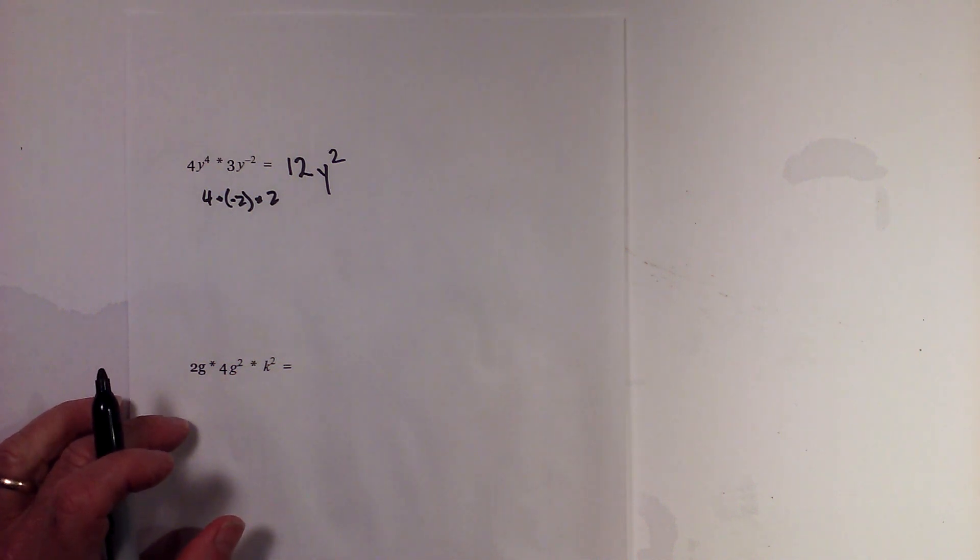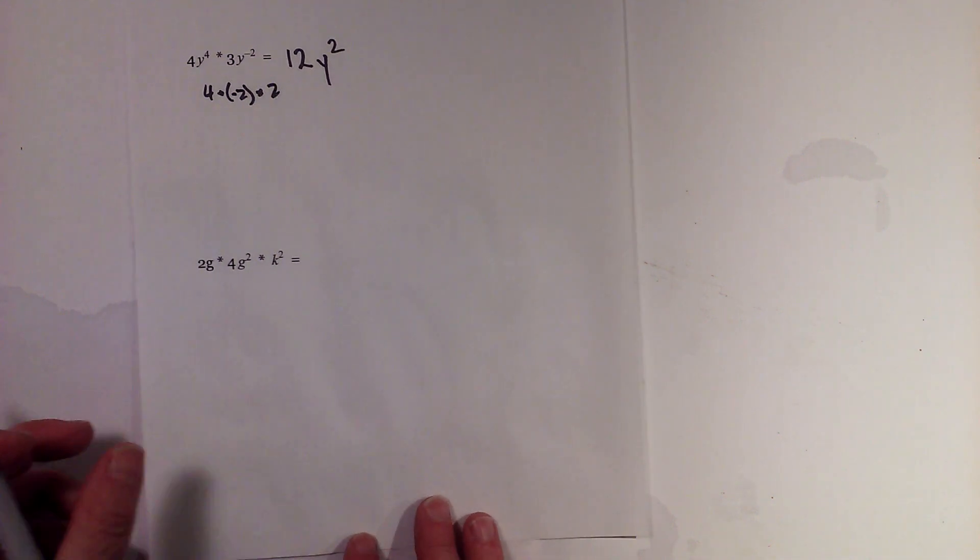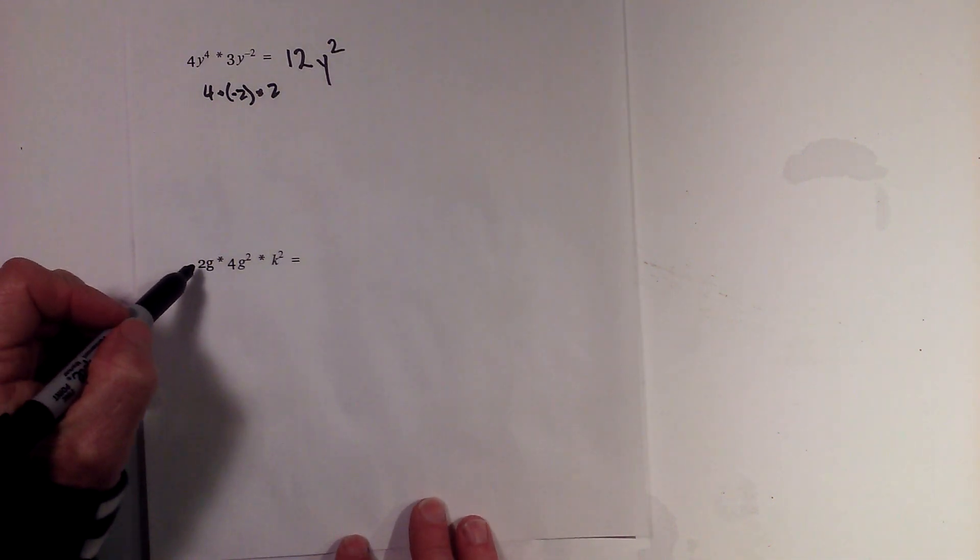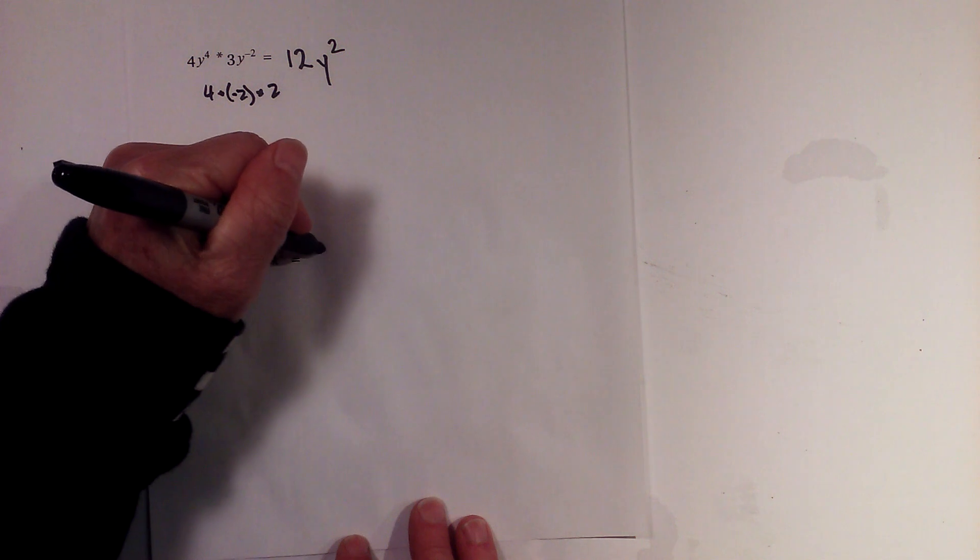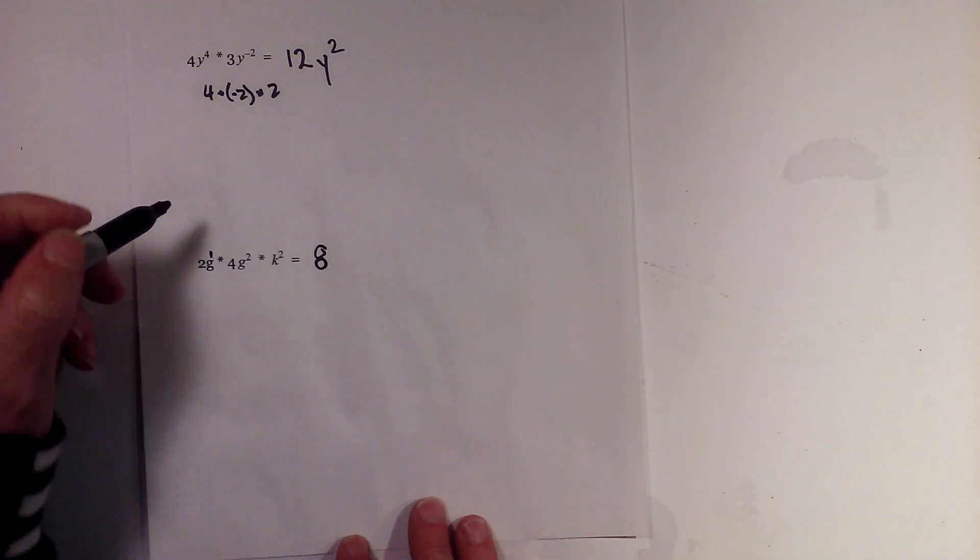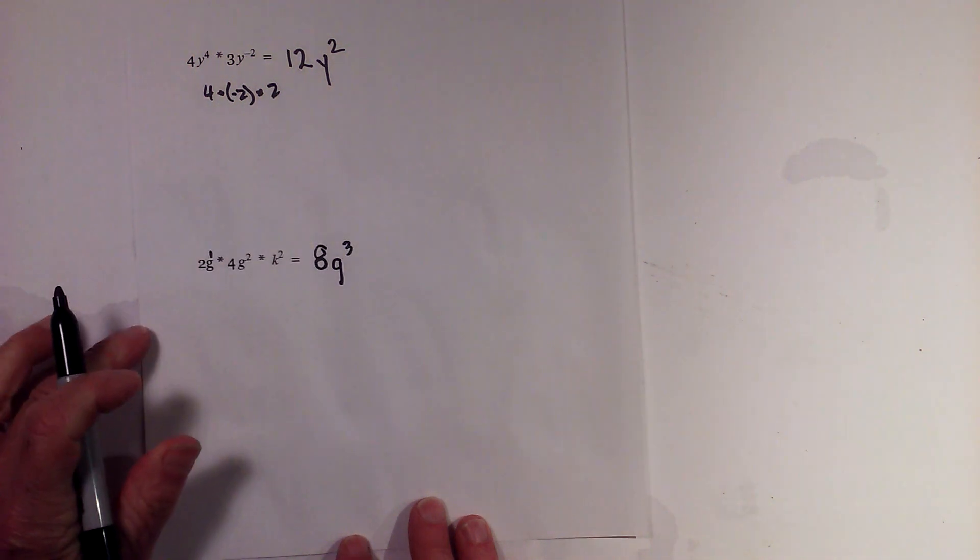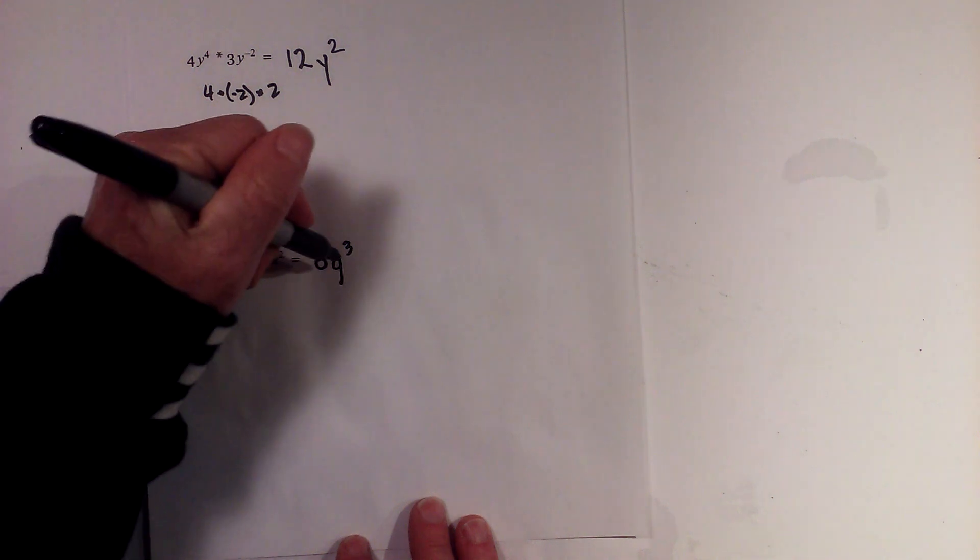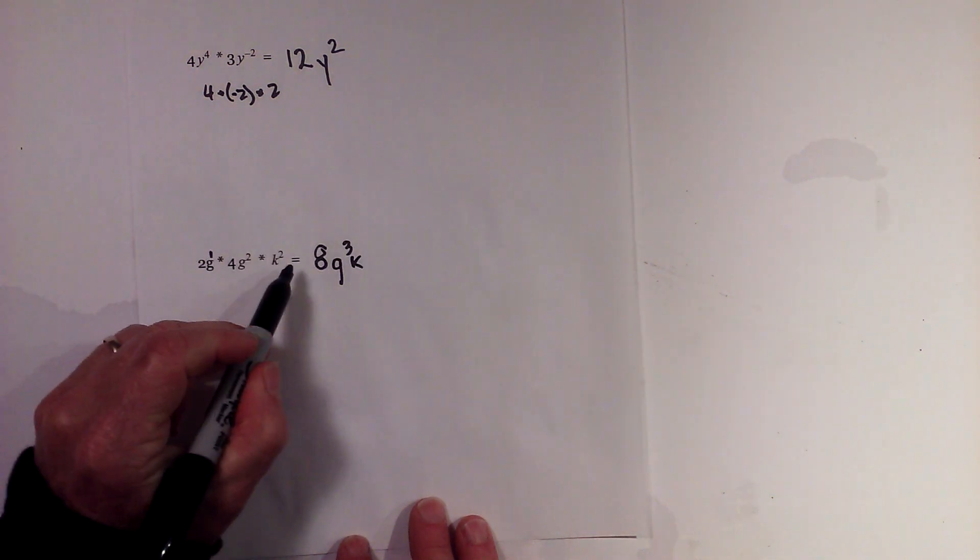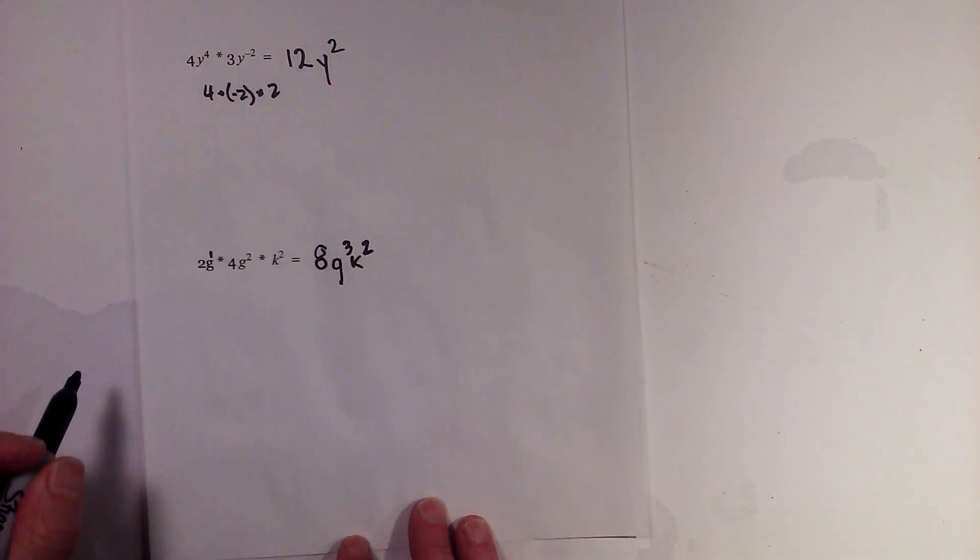Finally, let's look at this last one. We have a couple of bases that are different. Let's first multiply: two times four is eight. Remember there's one there—one plus two is three, so it'll be g cubed. Then this k you cannot add it to the g's because it's different, so it will be just k to the second. Remember to put these in alphabetical order.